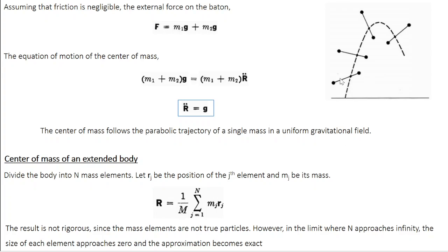When the major throws the baton into the air it rotates, so tracking the individual masses is complicated because the orientation of the baton changes at each point. But when you monitor the center of mass, you see it follows a simple parabolic trajectory. That is why, when analyzing a multi-particle system, it is always easier to monitor the center of mass — it gives you a general idea about the overall motion of the system. This is the importance of the concept of center of mass.